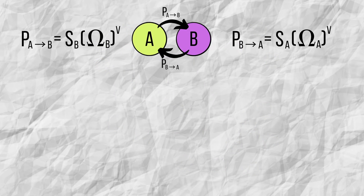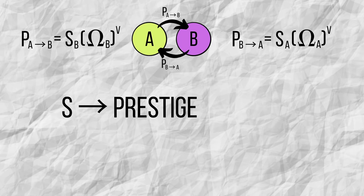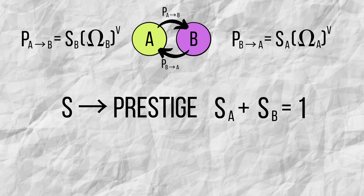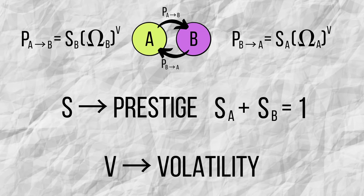The S's correspond to prestige, a property of each language related to factors such as media, education, or socioeconomic influence. To simplify, we consider that the more prestige one language has, the less prestige the other language has. Mathematically, this relationship must be fulfilled. On the other hand, the V corresponds to volatility, which is a property of social dynamics. It has to do with the reluctance of speakers to switch languages.